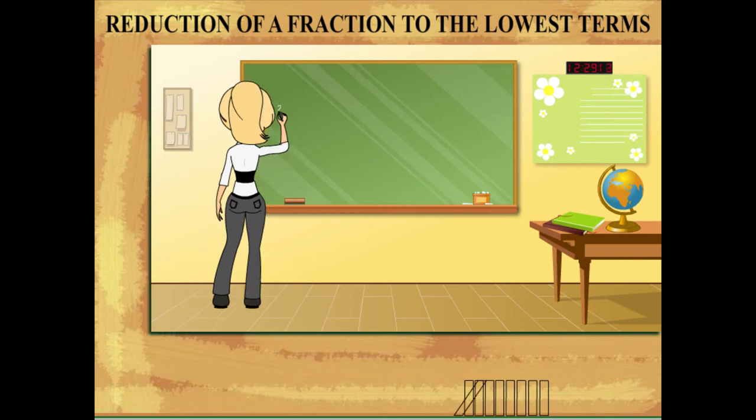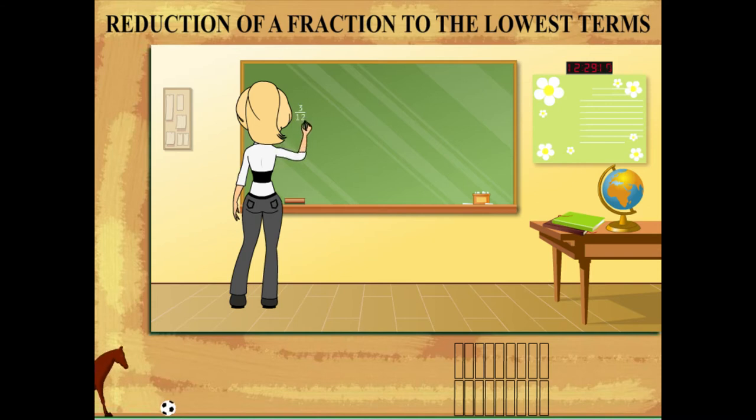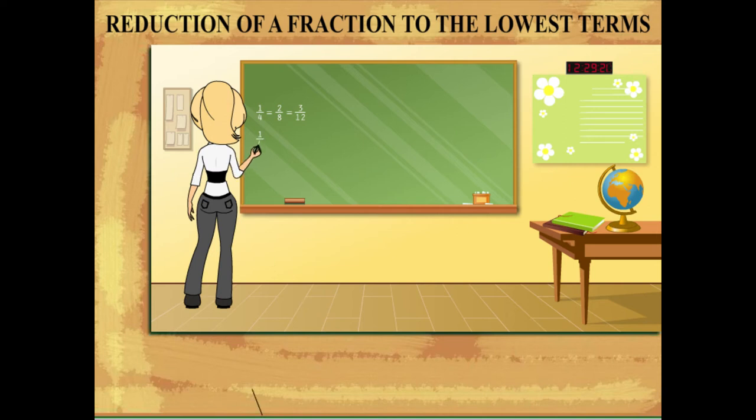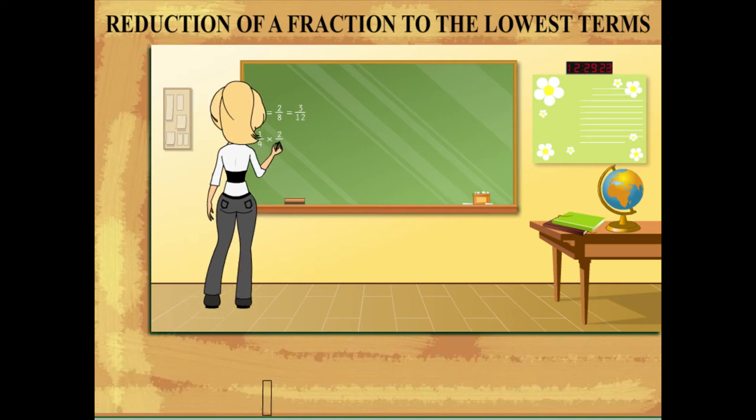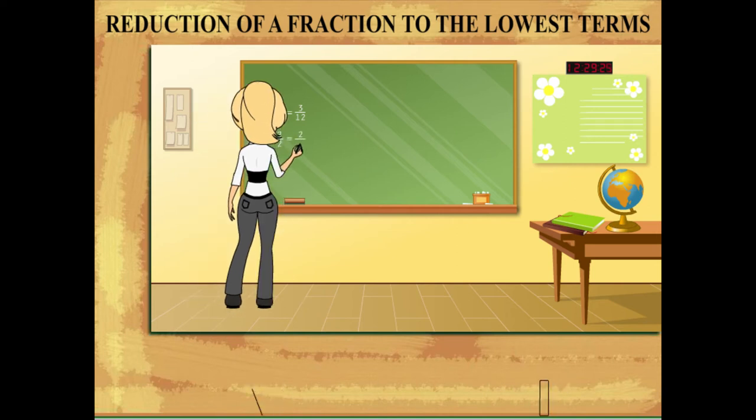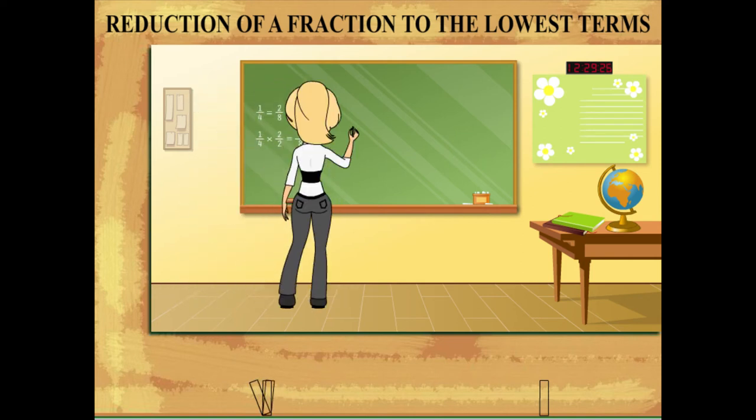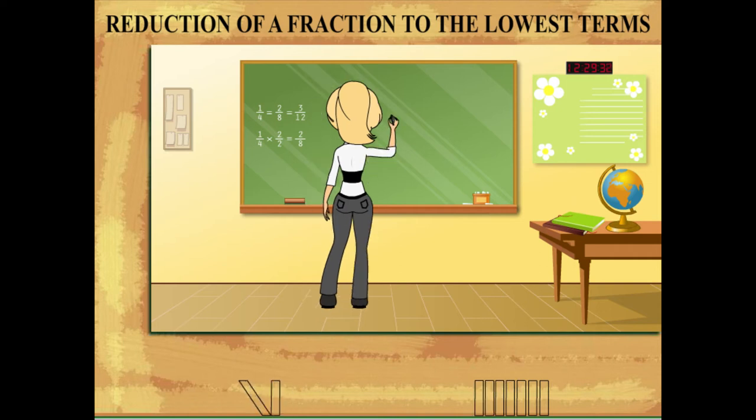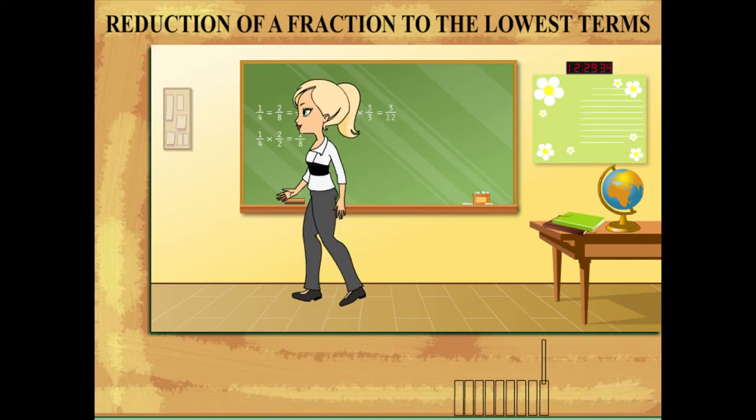1 by 4 equals 2 by 8 equals 3 by 12. She asks the children and writes the steps. 1 by 4 into 2 by 2 equals 2 by 8, and 1 by 4 into 3 by 3 equals 3 by 12.